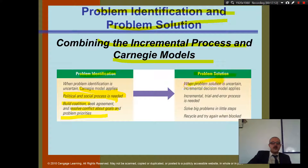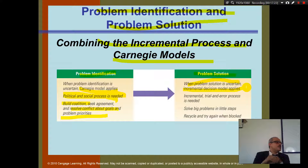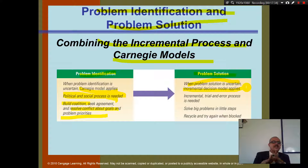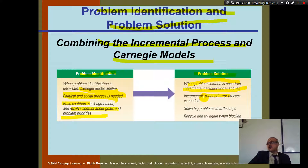When the problem solution is uncertain, the incremental decision model applies. If you don't know the solution, take it step by step — an incremental trial and error process. Try one thing; if it doesn't work, try another. Solving big problems happens in little steps, recycling and trying again when stuck. This is how you use the incremental approach in practice.